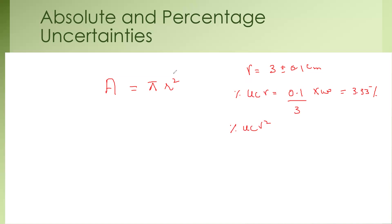Whenever there is an exponent or power, it gets multiplied into the percentage uncertainty. So the percentage uncertainty in R² will be 3.33 multiplied by 2. If it was a cube, we multiply by 3; if power 4, multiply by 4. The exponent of the quantity is multiplied by the percentage uncertainty.